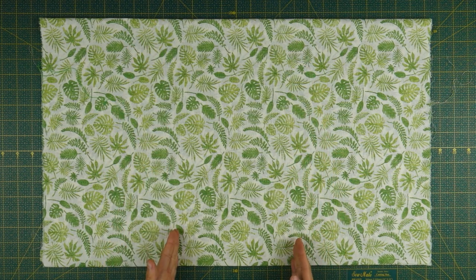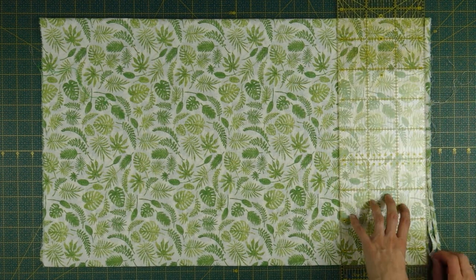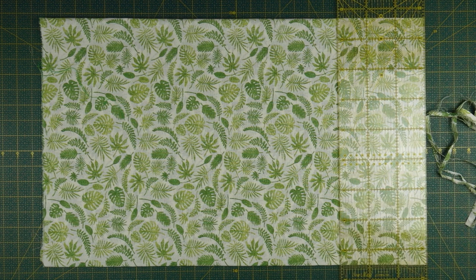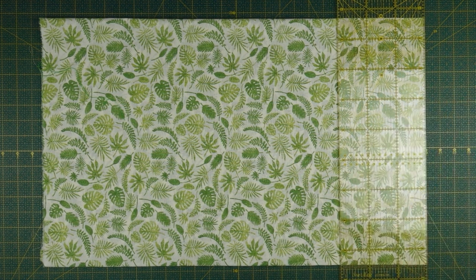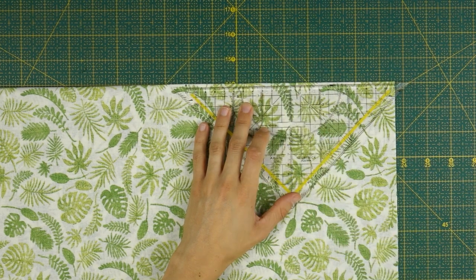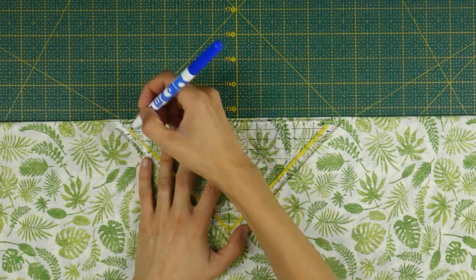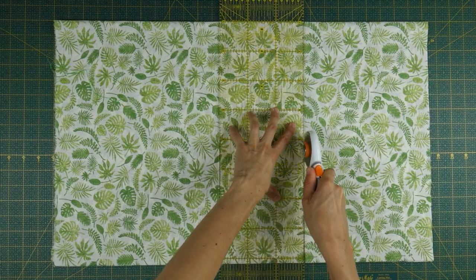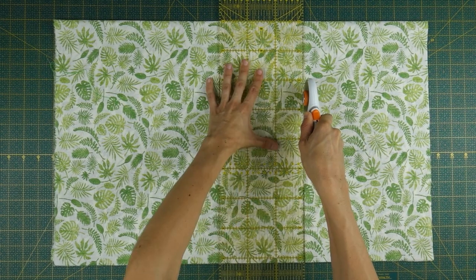With a rotary cutter and a cutting ruler, we'll start by removing the raw edge to make things as neat as possible before measuring the width of our stripes. Remember, this width equals the length of our triangle, seam allowance included. In our example, that's 22 cm.